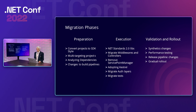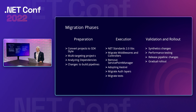The second phase is execution: migrating middlewares and controllers, removing the ServicePointManager which isn't supported in .NET Core, and replacing SocketsHttpHandler. We made Kestrel adoption a requirement due to its performance improvements. We then migrated the authentication layer, and finally migrated the end-to-end tests. Because these are large services with around 10 test cases, we needed all other layers completed first before addressing the tests.